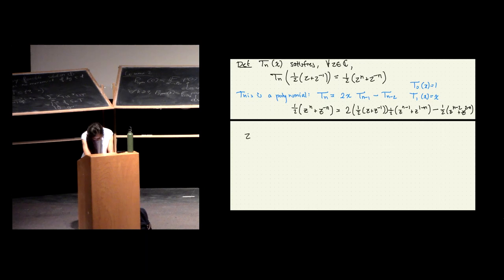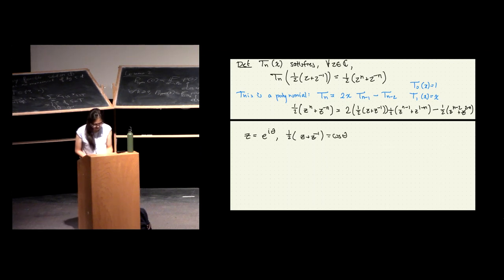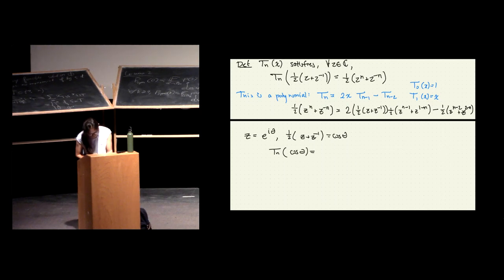If we take z to be something on the complex unit circle, then (1/2)(z + z^{-1}) is equal to cosine of the angle — it's the real part. So you get a definition that might be more familiar, which is that the Chebyshev polynomial applied to cosine θ gives cosine nθ: T_n(cos θ) = cos(nθ).